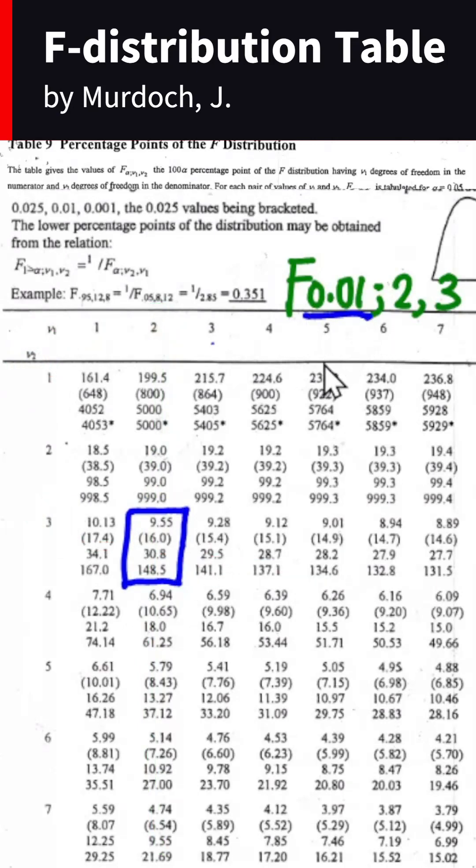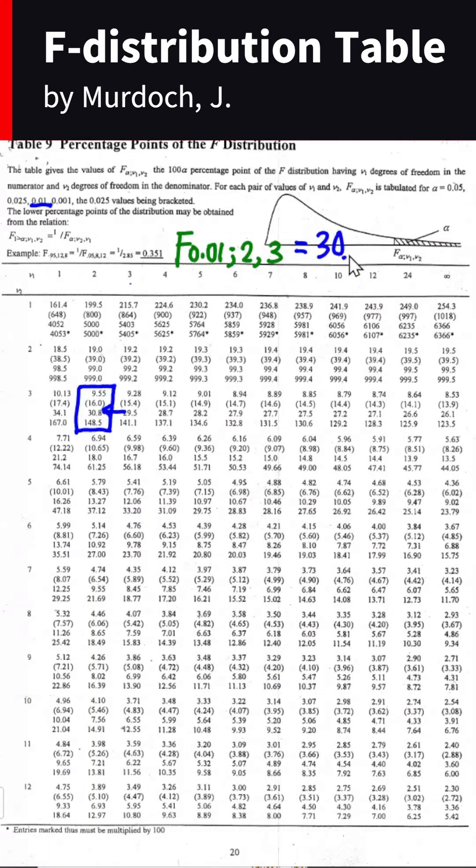And what we need is the 0.01 significance level, which is placed in the third position. So we should refer to the third value, which is 30.8.